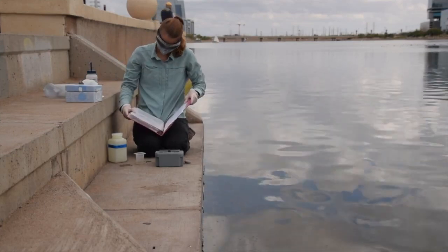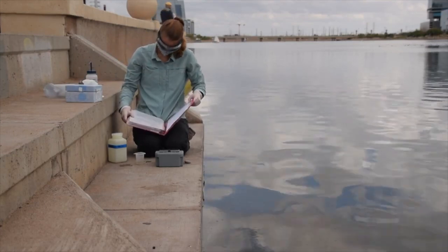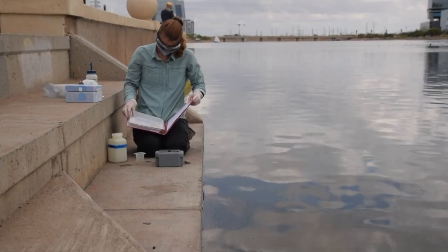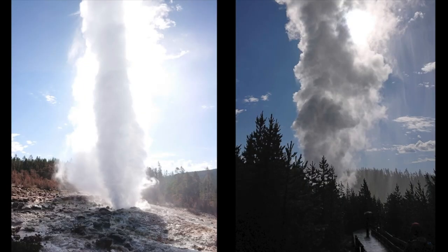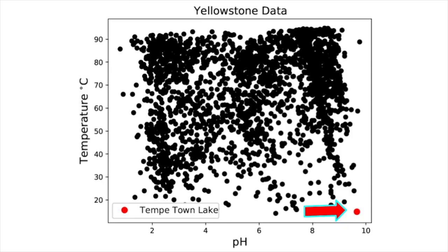But just how does this compare to a hot spring? The pH of Yellowstone hot springs actually spans from a pH of 1 to 10, so the pH we measured at Tempe Town Lake is actually well within the range of a Yellowstone hot spring.